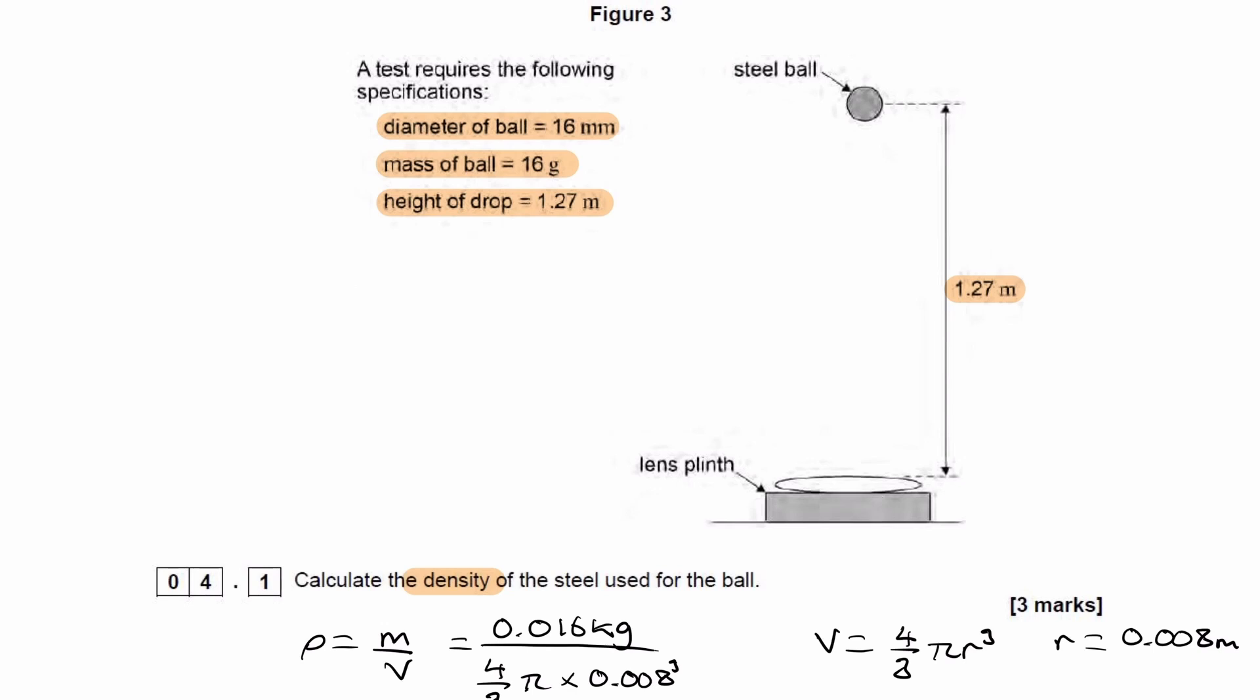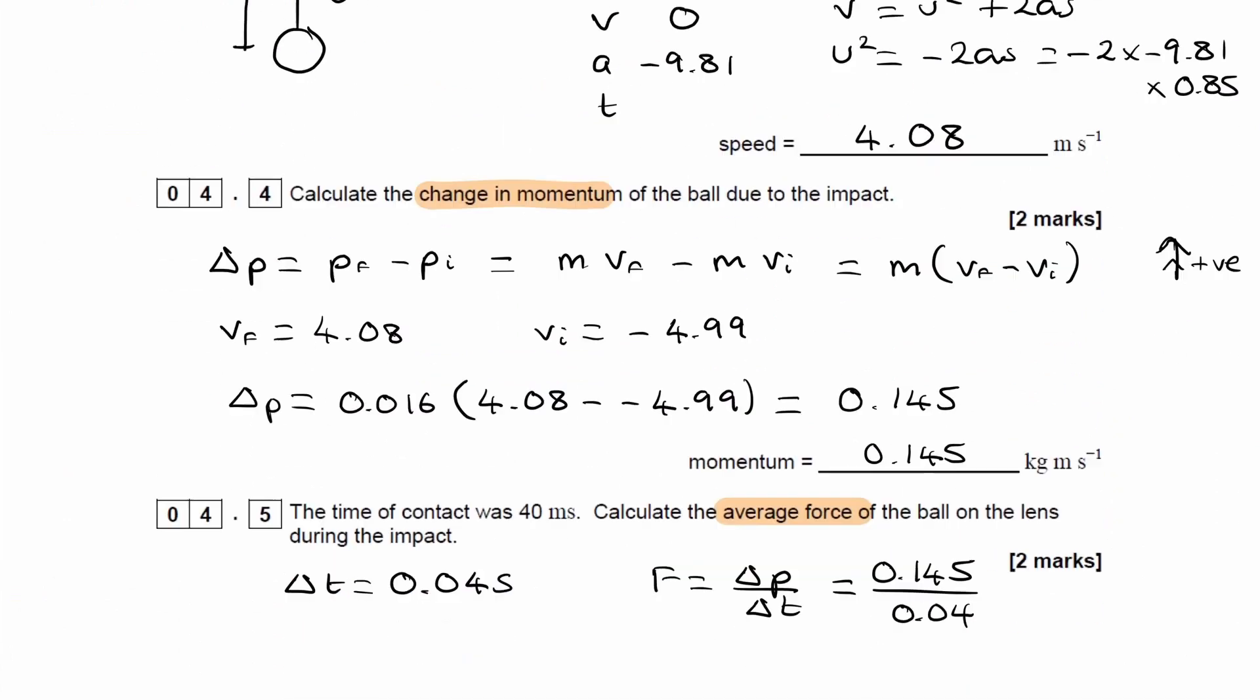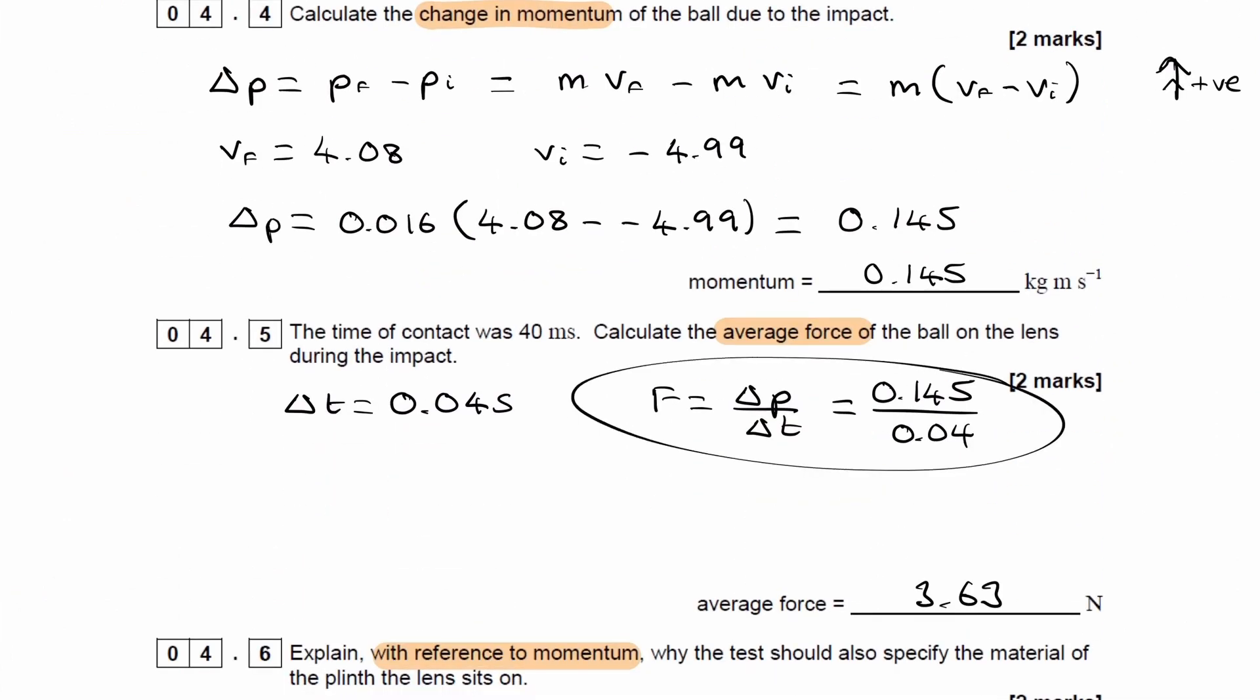Then what happens is the steel ball, when it hits the lens, the lens and the steel ball will compress down into the pillow. The ball then might bounce up a little bit. The time of collision would be much higher. And if the time of collision is much higher, well, if we think about our force equation, if we increase the time, so if we have Δt going up, that will decrease the force.